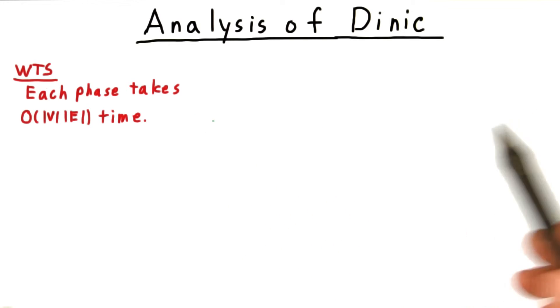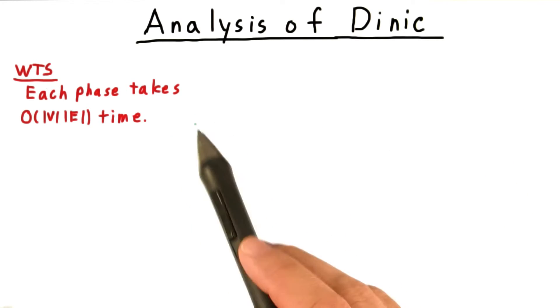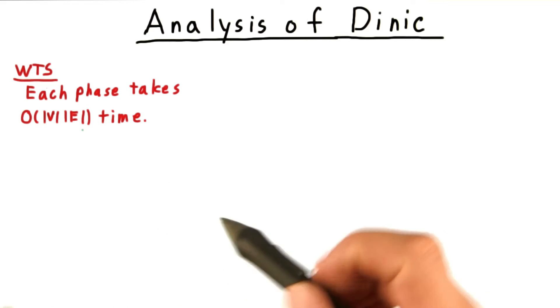We turn now to the key part of the analysis, where we show that each phase of the Dinic algorithm takes V times E time.